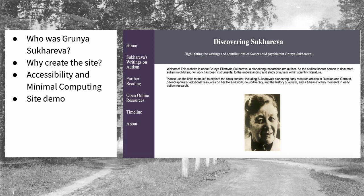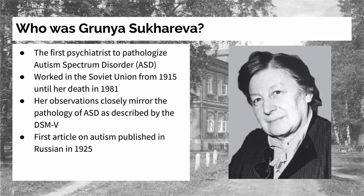I'll go through Sukareva's background, talk about why I chose to create the site, go through how accessibility and minimal computing practices were put into practice, and then do a live demo. So who was Grunia Sukareva? She was the first psychiatrist to pathologize autism spectrum disorder, also known as ASD, but until very recently has often been overlooked in the literature highlighting the history of ASD. She worked in the Soviet Union from 1915 until her death in 1981, and her observations very closely mirrored the pathology of autism as described by the DSM-5, which is the current version of the DSM Diagnostic Manual. Her first article on autism was published in Russian in 1925, and a German translation soon followed.